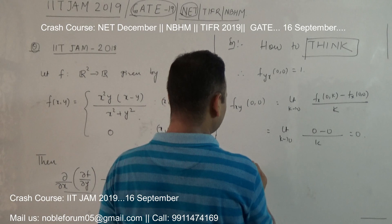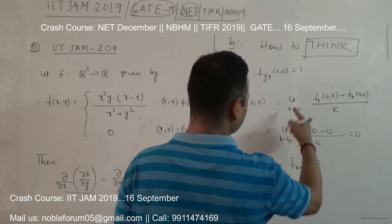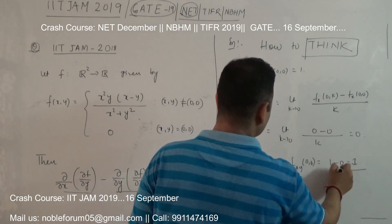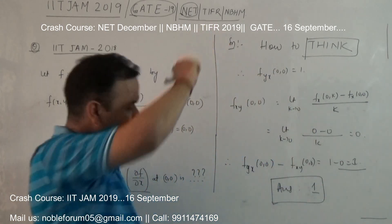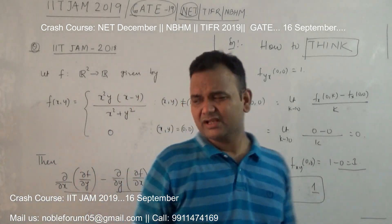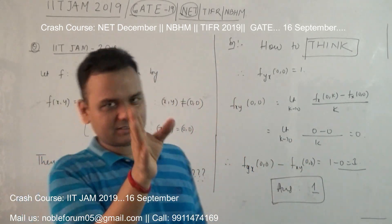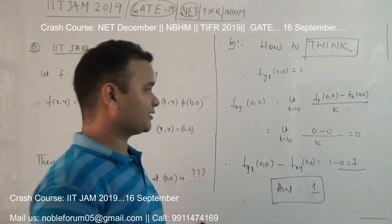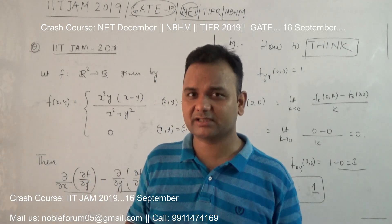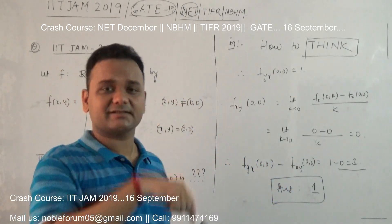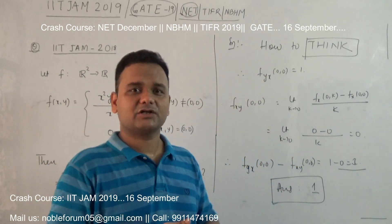Therefore, f_yx at (0, 0) minus f_xy at (0, 0) is nothing but 1 minus 0, which equals 1. So the correct answer is 1. It is very simple when we are clear on mixed derivatives. Come learn mathematics with me. Thank you for watching my videos — it really means a lot to me. Thank you so much.